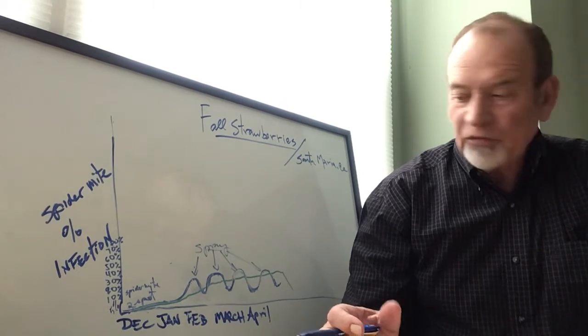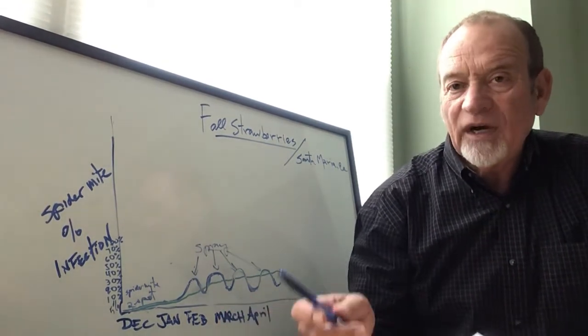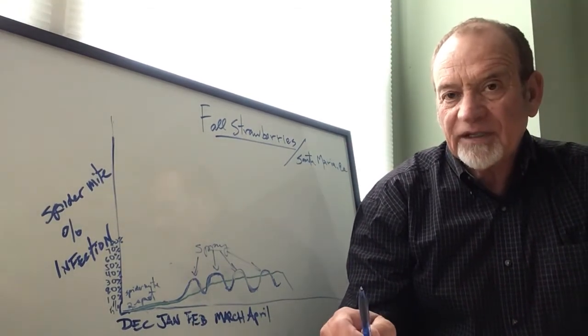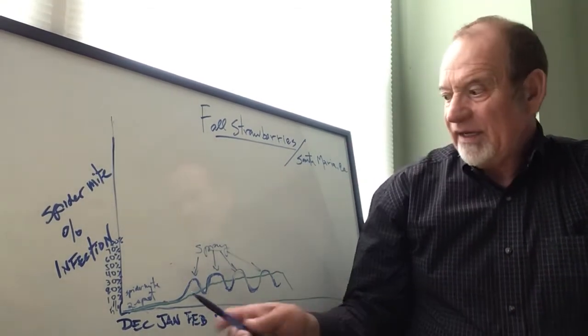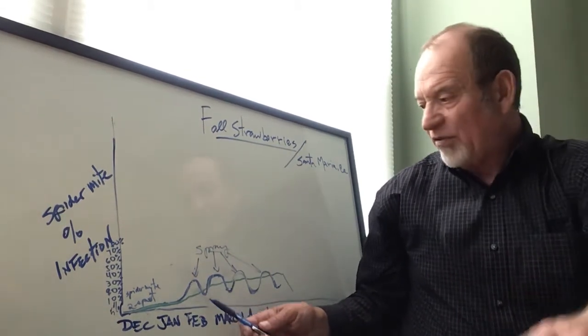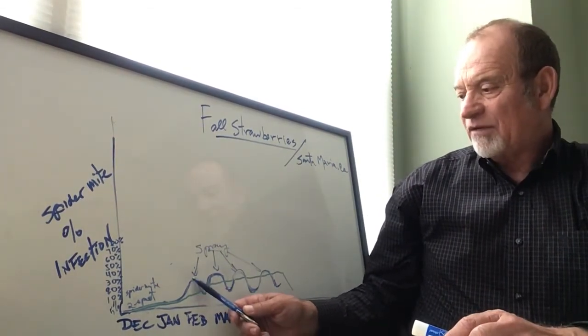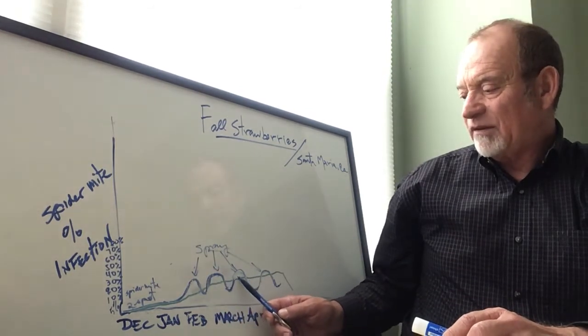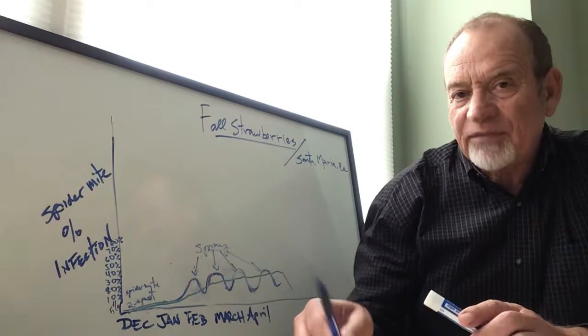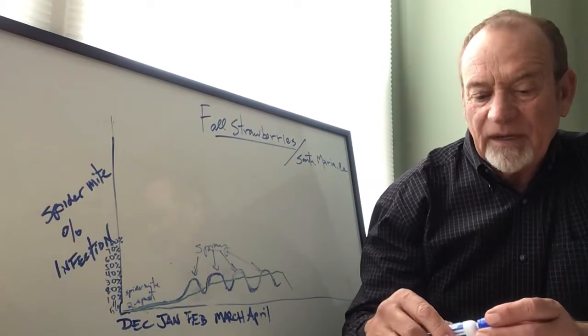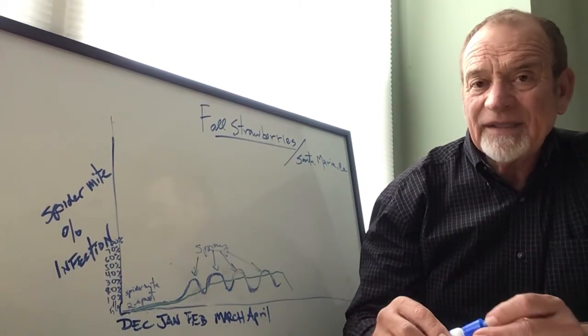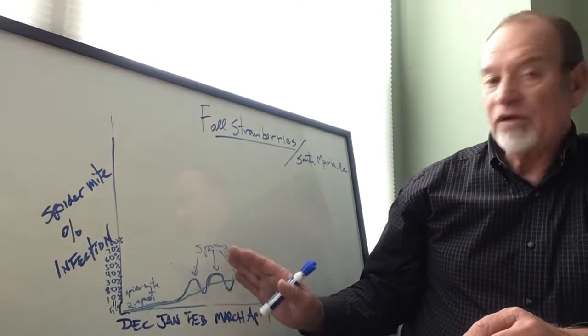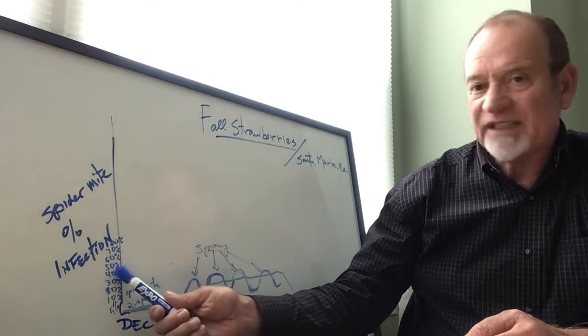So we can figure out the ratio between the predator and the pest. Sometimes I get away with two sprays. This curve reaches 50% predatory mites, 50% pest. When that happens, we eliminate two sprays. If we need to continue spraying because the percent infection is high, then I keep the sprays.